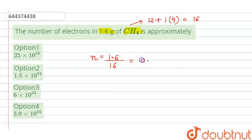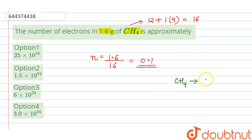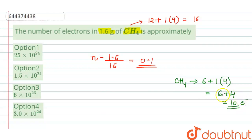So the number of moles comes out to be 0.1. Now, in one molecule of CH₄, the number of electrons: carbon has 6 electrons, plus hydrogen has 1 electron, multiplied by 4 since there are 4 hydrogens. So 6 plus 4 equals 10 — it has 10 electrons.